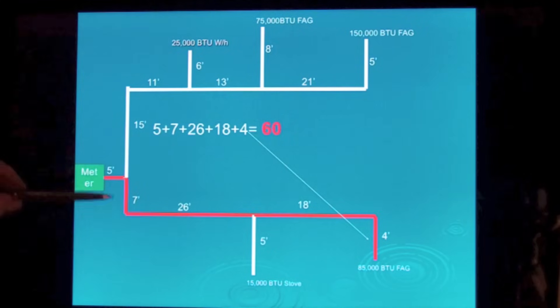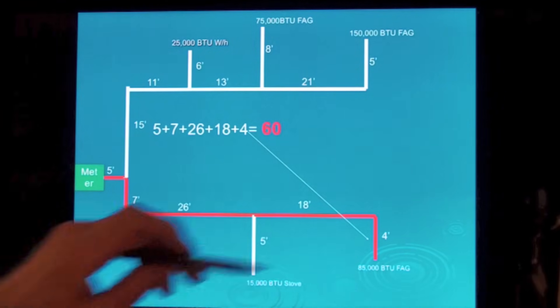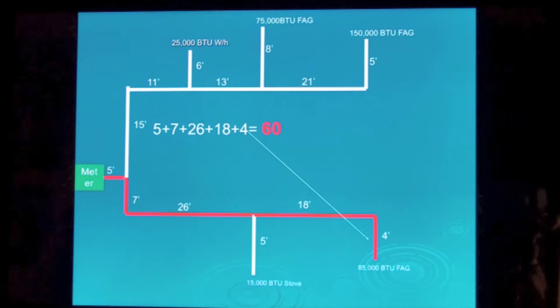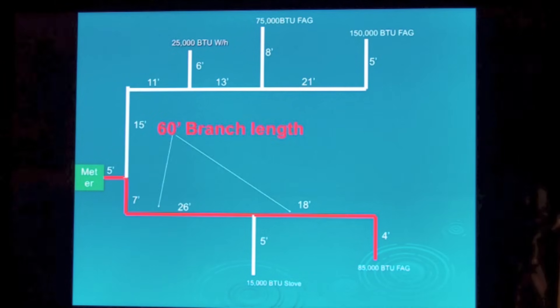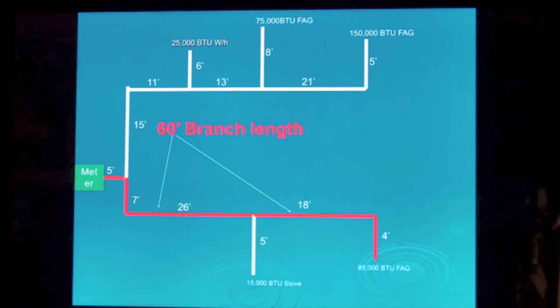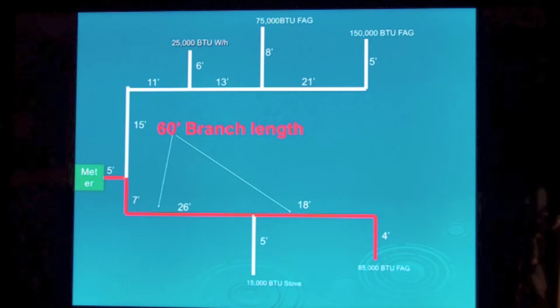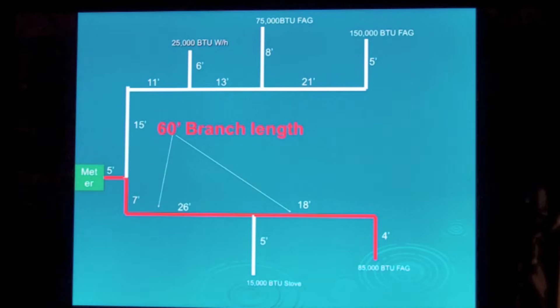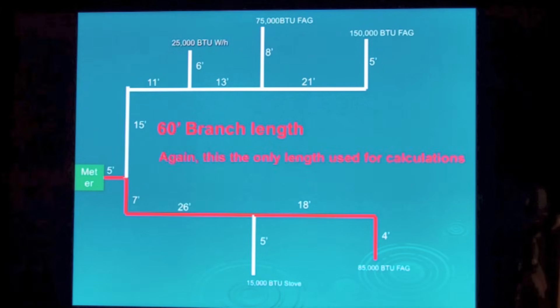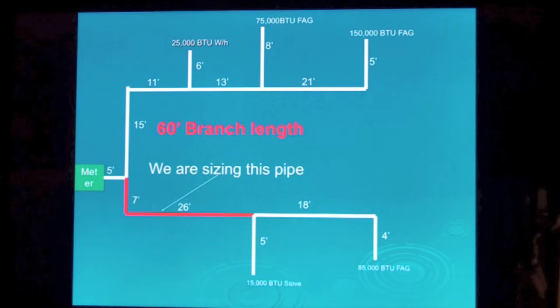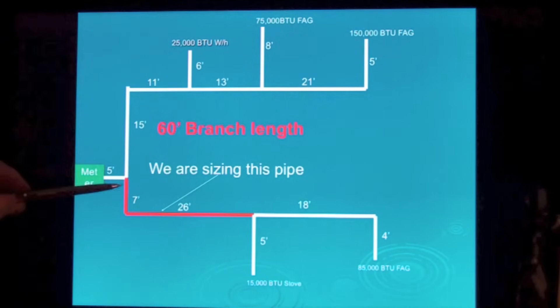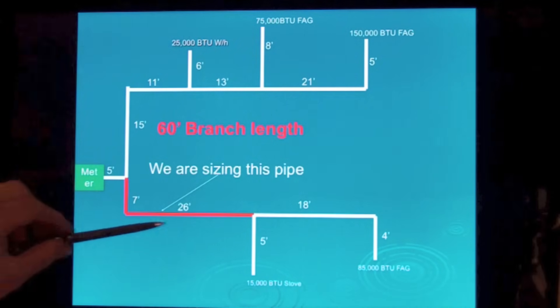So I've got a total of 60 feet out to this 85,000 BTU furnace. I'm going to use a 60 foot branch length because I'm not doing the same branch as I did before. I'm doing this other branch down here. 60 foot branch length. This is the only length we're going to use for all these calculations. And we're sizing just this pipe right here.